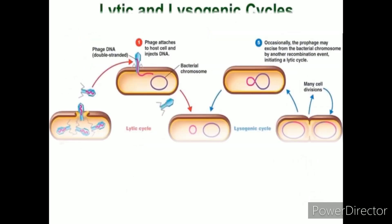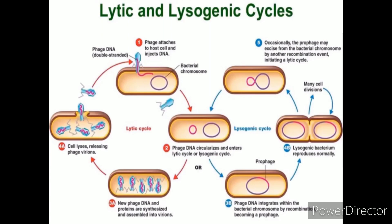Differences between the lytic and lysogenic cycles: In the lytic cycle, the viral DNA remains as a free-floating molecule and replicates separately from the bacterial DNA. The lysogenic cycle is defined by the incorporation of the bacteriophage genome into the host genome. The lytic cycle is also called the infective cycle or the virulent cycle, while the lysogenic cycle is also called the temperate cycle or the non-virulent cycle. In the lytic cycle, the viral DNA remains in the cytoplasm, but in the lysogenic cycle, the viral DNA is incorporated into the host chromosome. Host DNA is destroyed by proteins encoded by the viral DNA in the lytic cycle, whereas host DNA is not affected in the lysogenic cycle.